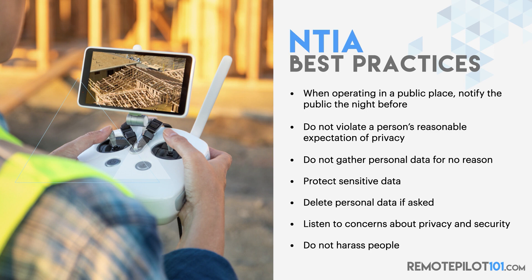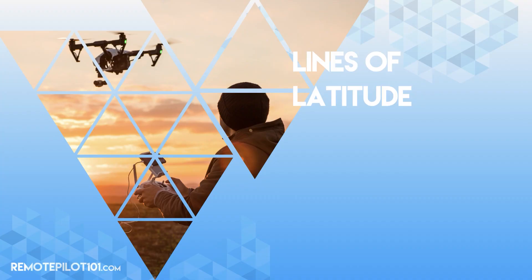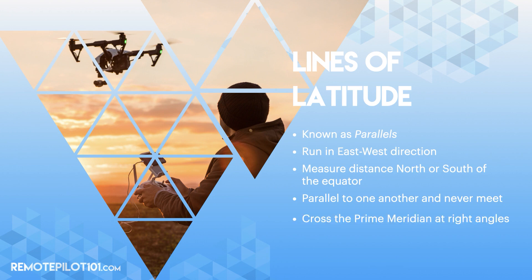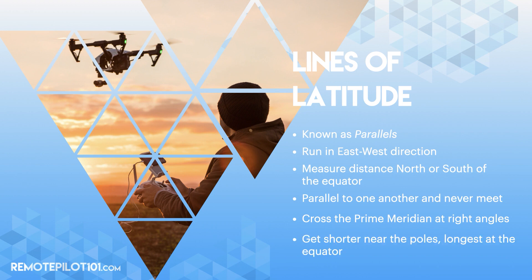When we are using a map or a sectional, we find things using latitude and longitude. On a sectional or map, latitude and longitude are those black lines and numbers and the tick marks that represent minutes and degrees. This combination of latitude, longitude, minutes, and degrees are called coordinates. When given coordinates, we always start with the latitude. Lines of latitude are known as our parallels — they run east to west to measure the distance in reference to north or south of the equator. They cross the prime meridian — the longitudinal line that crosses through Greenwich, England — at right angles, and they're shortest near the north and south pole and longest near the equator.